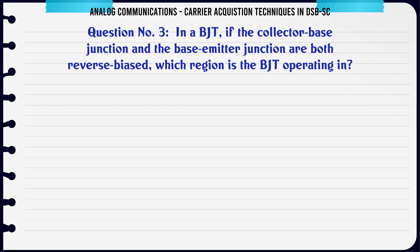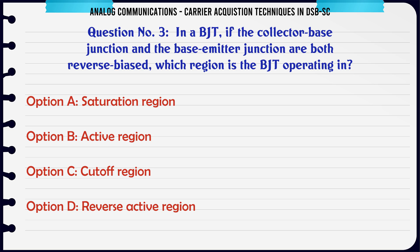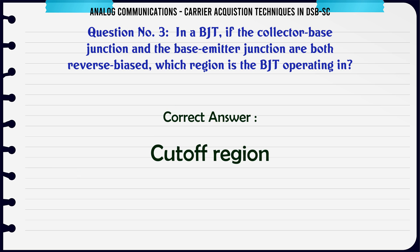In a BJT, if the collector-base junction and the base-emitter junction are both reverse biased, which region is the BJT operating in? A. Saturation region. B. Active region. C. Cutoff region. D. Reverse active region. The correct answer is Cutoff region.